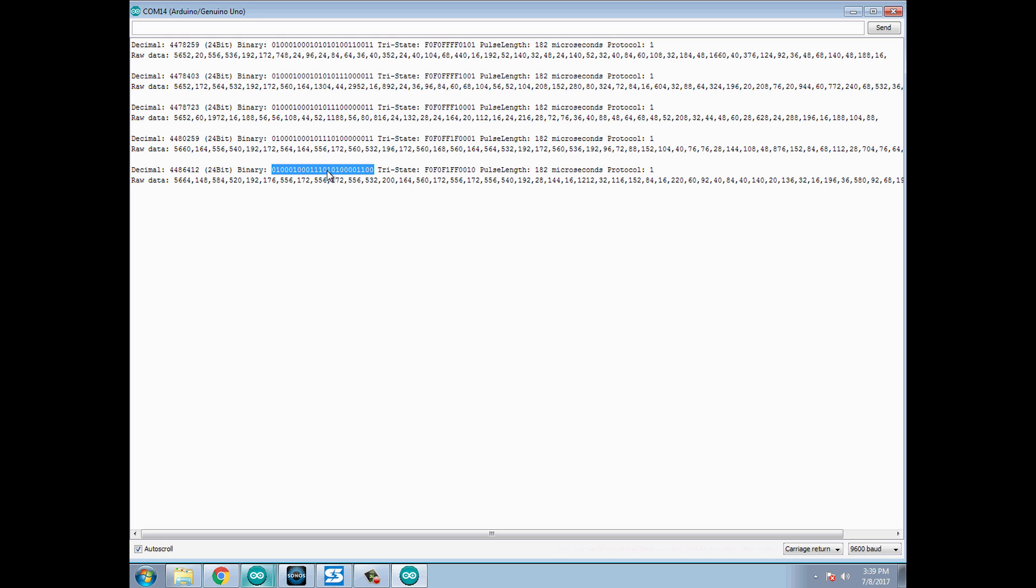Now keep in mind on your remote both the on and off commands each have their own separate code to it. So I'm paying attention to the binary here. You could use decimal, you could use the tri-state. It doesn't really matter but I'm just using the binary. The other thing you need to pay attention to is your pulse length. My pulse length is 182. That is not the default so that is important in the code. If you just use the default code and try to plug in your binary commands it won't work. You need to change the pulse length.